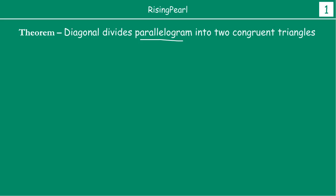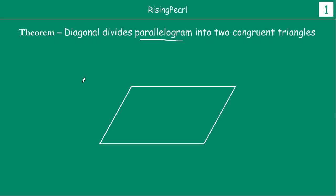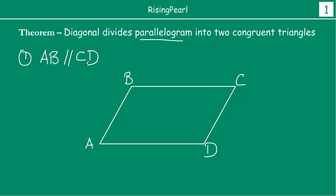So let us draw a parallelogram ABCD. If this is a parallelogram ABCD, then it means that AB is parallel to CD, because those are opposite sides.